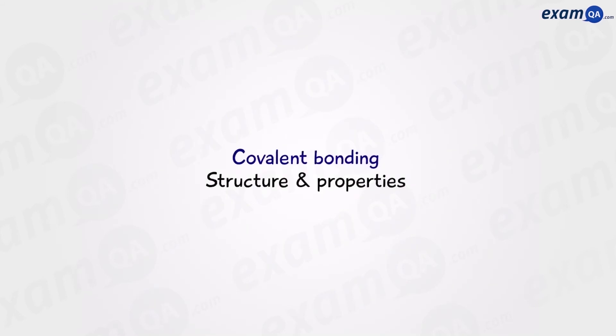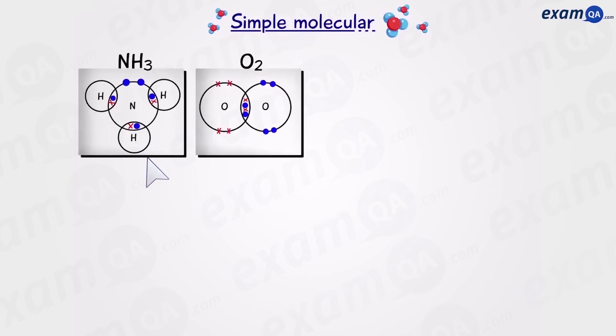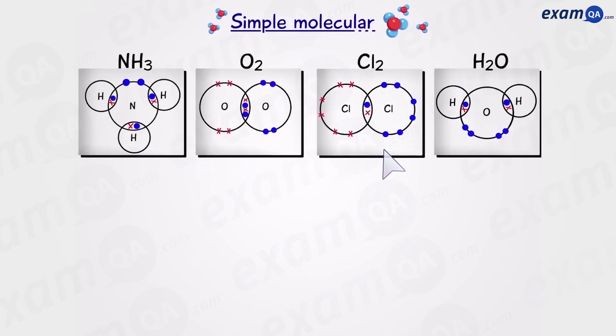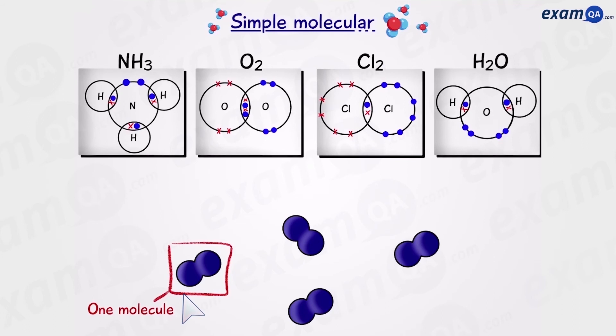Now we're going to talk about structure and properties of covalent molecules. The first type of structure is known as simple molecular structures. And this includes molecules such as ammonia, oxygen, chlorine, and water, just to name a few. These substances exist as molecules floating around. Now, one of their properties is that they have low melting and boiling points. Which means that at room temperature, they're mostly going to be gases or liquids. We won't have any solids at room temperature.